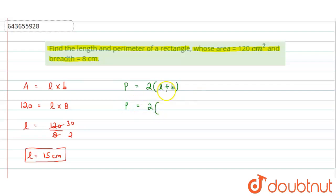Now just put the values of length and breadth in this formula. So length is equal to 15 centimeter and breadth is equal to 8 centimeter. So this will come out to be 2 into 23, and perimeter equals to 46 centimeter. So this is the value of perimeter of this rectangle.